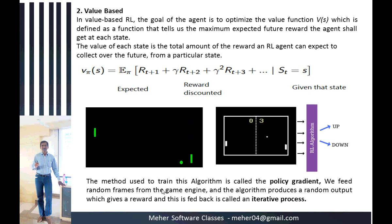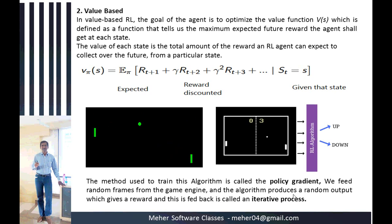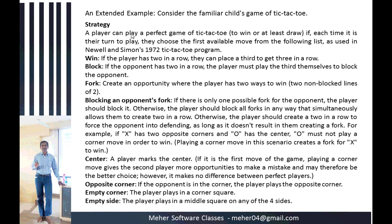This method uses an algorithm called policy gradient. We feed random frames from the game engine and the algorithm produces a random output which gives a reward. This is an iterative feedback process. A real-time extended example is the tic-tac-toe game.